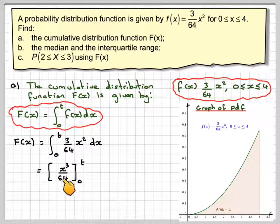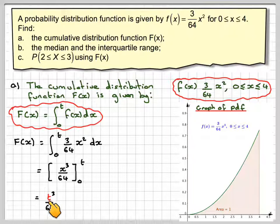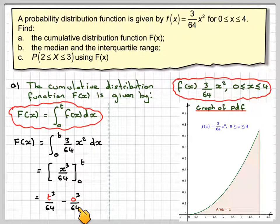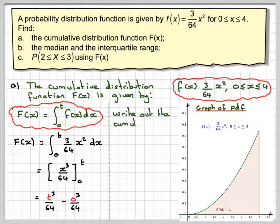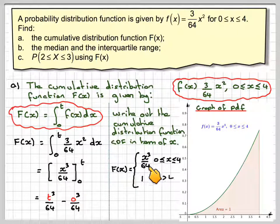Integrating gives x³/64. The 3 in the numerator and the 3 from integrating x² cancel out, so we get x³/64 evaluated from 0 to t. Putting in our values gives t³/64 minus 0³/64, which is 0. Therefore we write the cumulative distribution function CDF in terms of x as F(x) = x³/64 for x between 0 and 4.